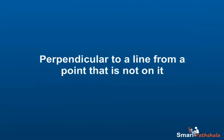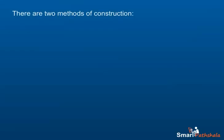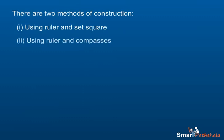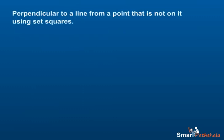Let us now learn to draw a perpendicular to a line from a point that is not on it. There are two methods for doing it: 1. Using ruler and set square, 2. Using ruler and compasses. Let us learn the first method.